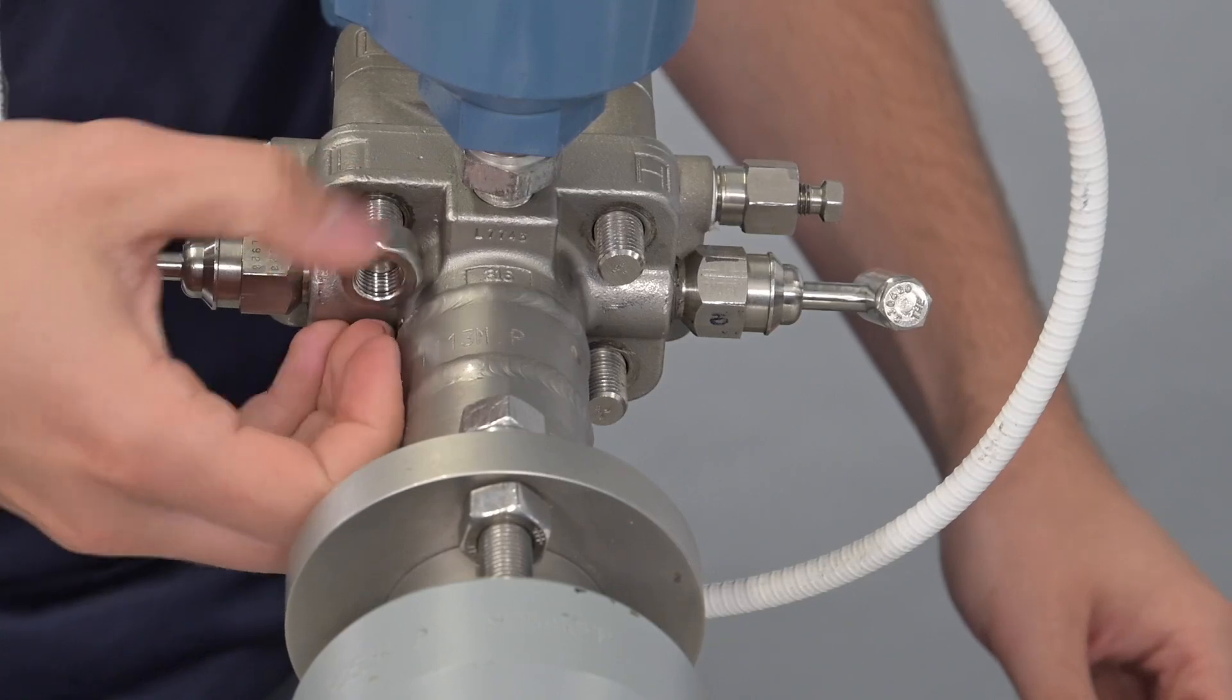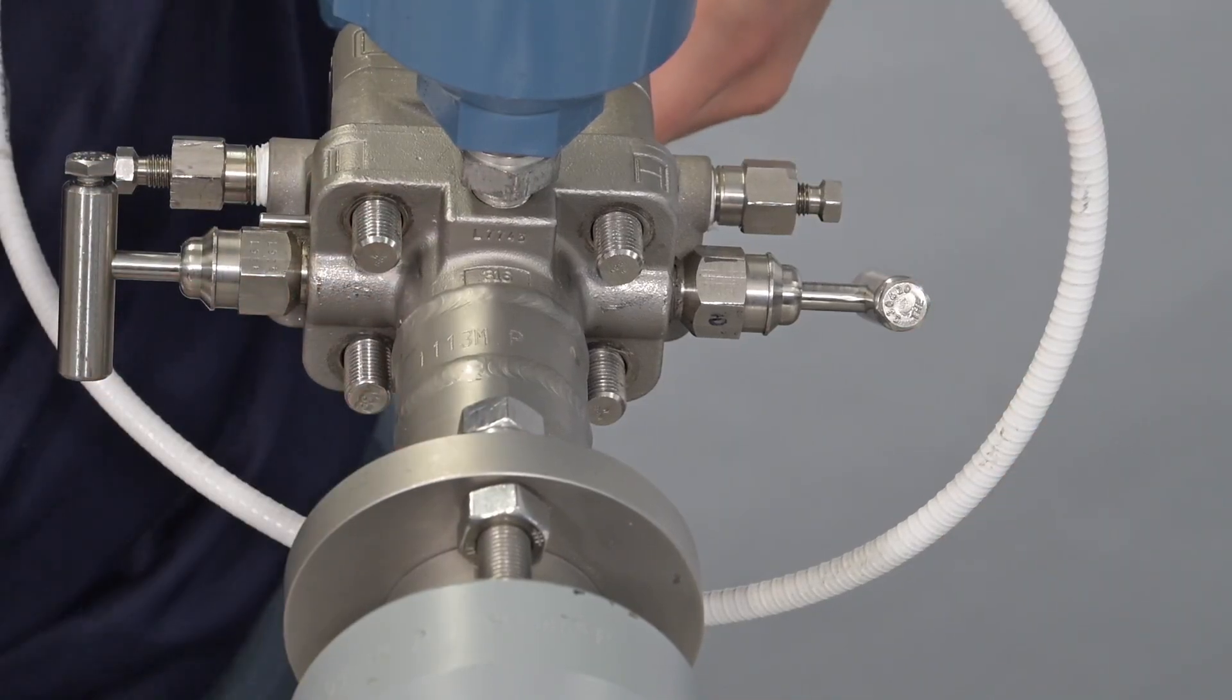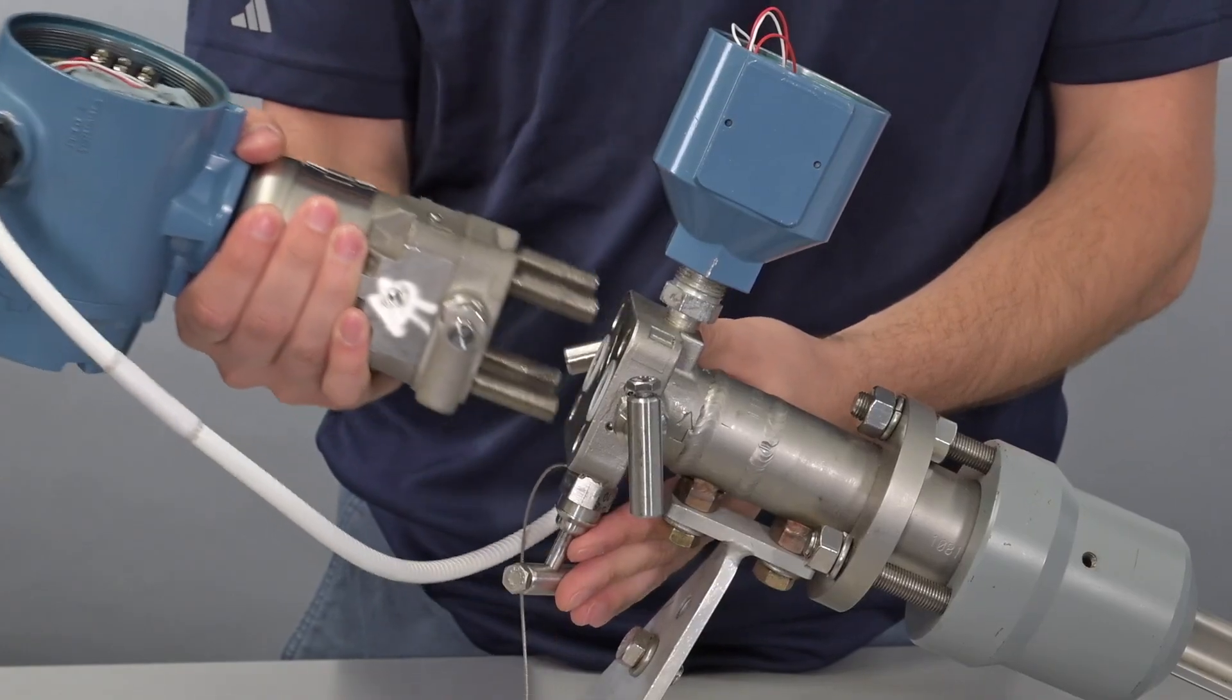Remove the hex nut for the transmitter to the anubar connection and then remove the transmitter. Set it aside.